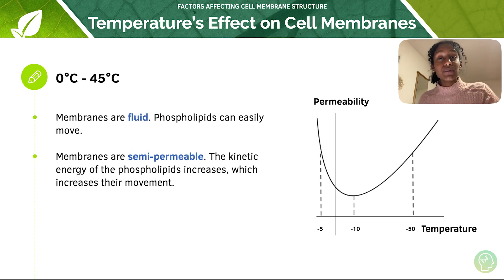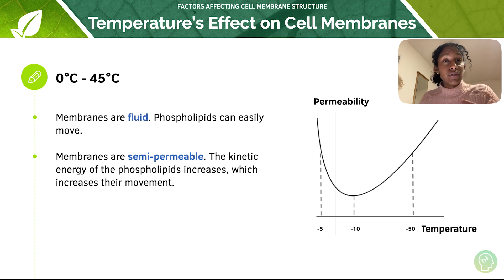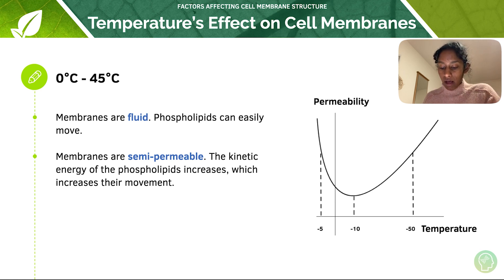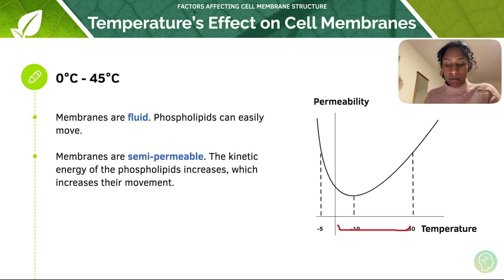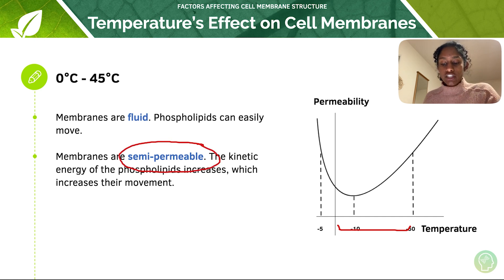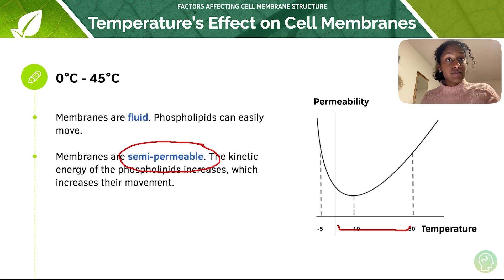Between zero degrees and 45 degrees, we have a more fluid membrane. Phospholipids can easily move because temperatures are warmer. We say that membranes are semi-permeable — this is a really important term to remember. The kinetic energy of the phospholipids increases with temperature, which increases their movement, making the membrane nice and fluid and permeable.